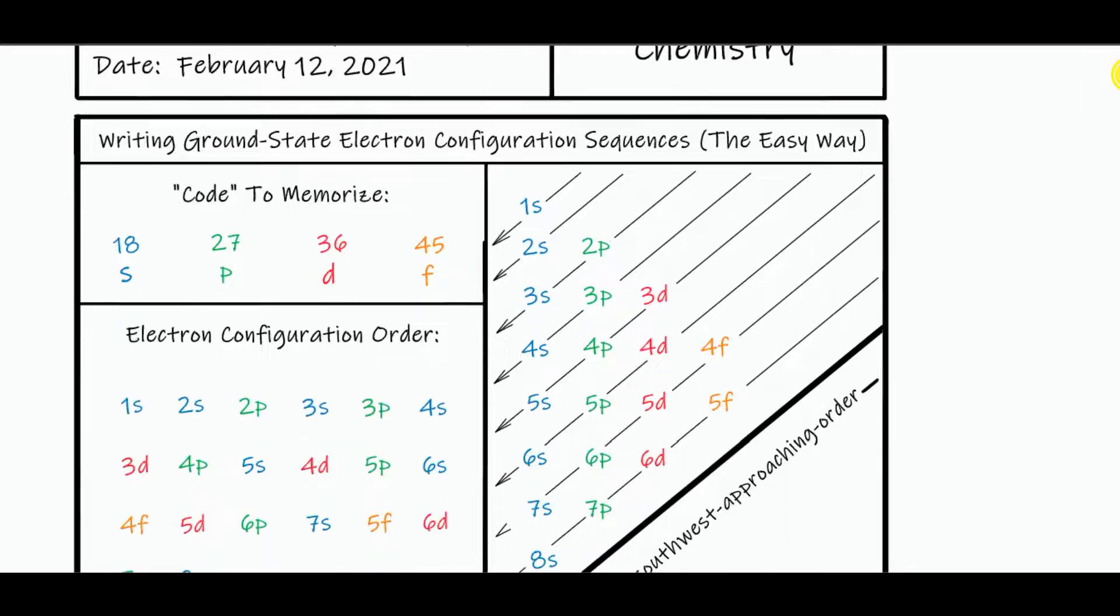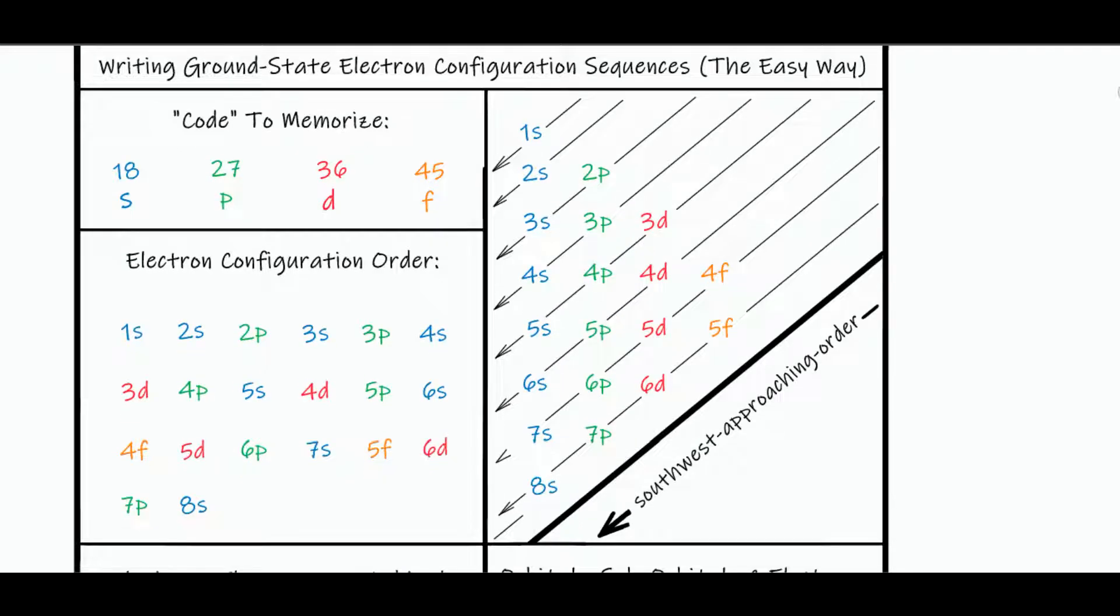And I call it the easy way, because in order to amass all this data quickly, you can just memorize the code 18, 27, 36, 45, S, P, D, F, and then 1, 3, 5, 7 times 2 is 2, 6, 10, and 14 electrons maximum.